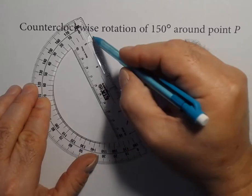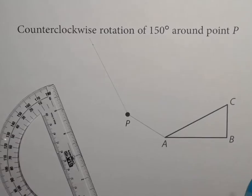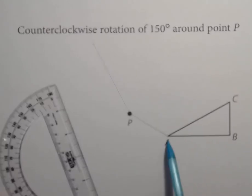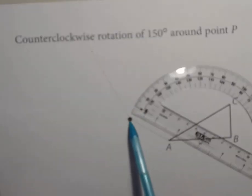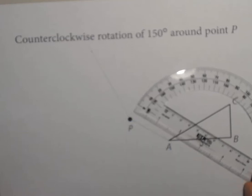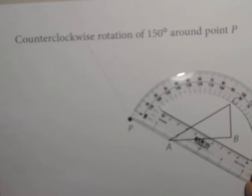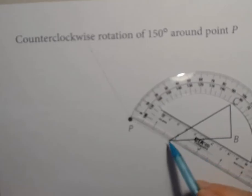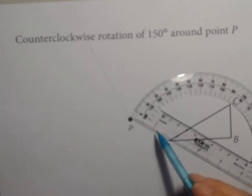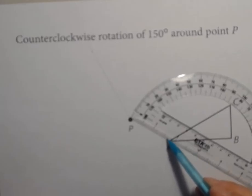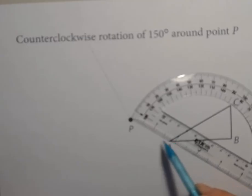The line does not need to be dark — make it nice and light, just enough for you to see. Now I need to figure out where A prime ends up on this line. I'm going to use the ruler end of the protractor to measure the distance between point P and point A. Point A is five little ticks past the one and a half point. The little markings are sixteenths, so the distance between point P and point A is one and thirteen sixteenths inches.